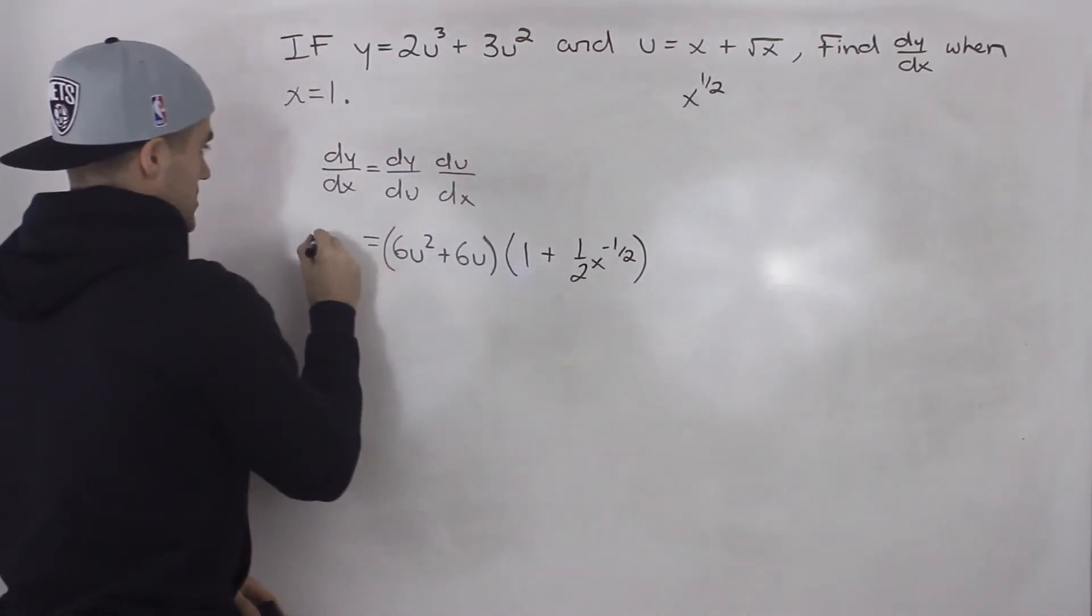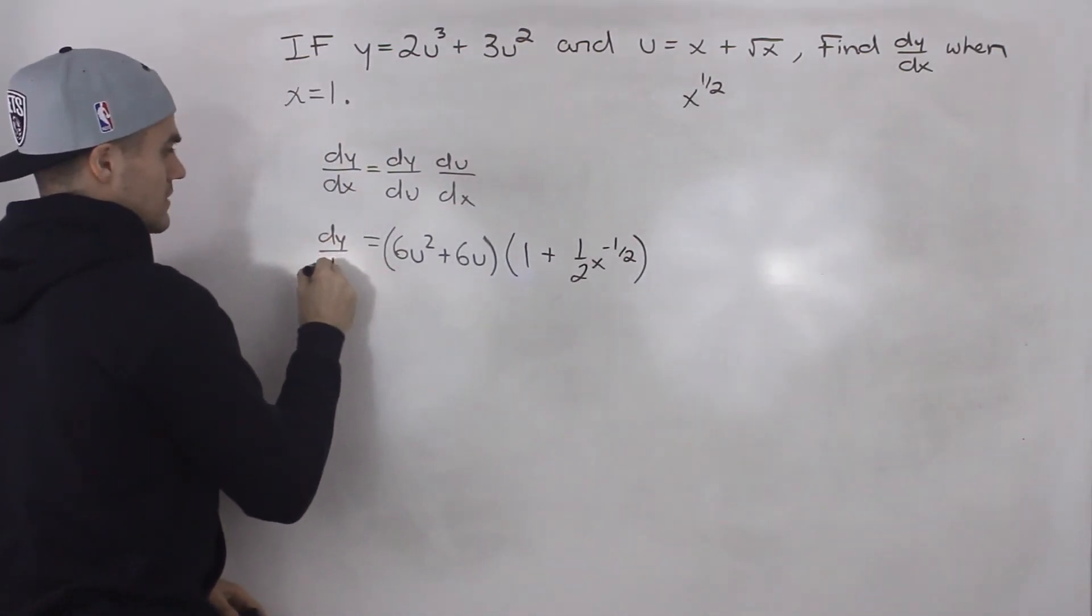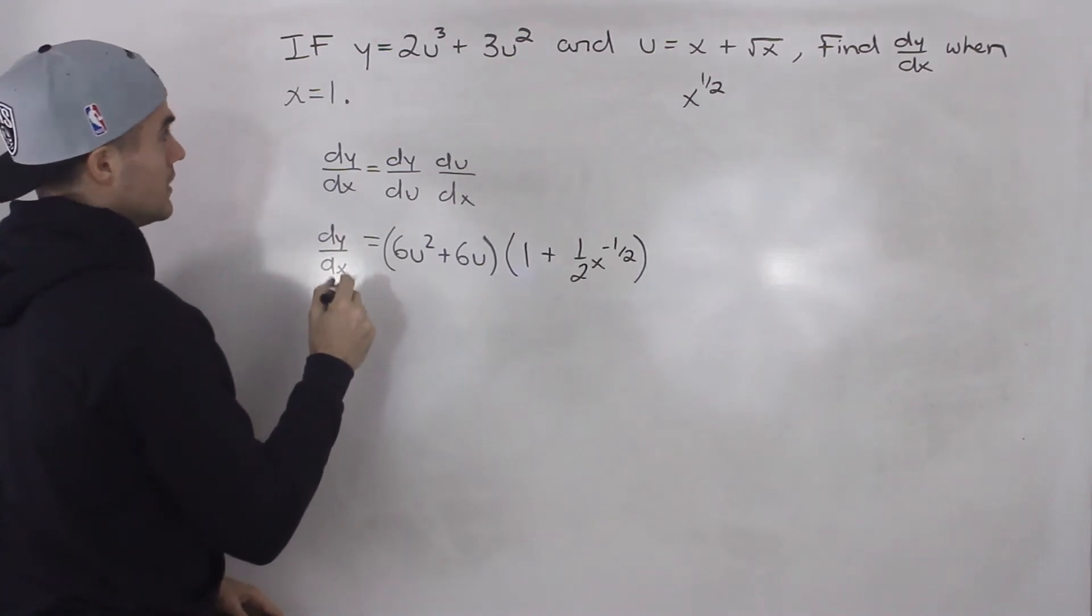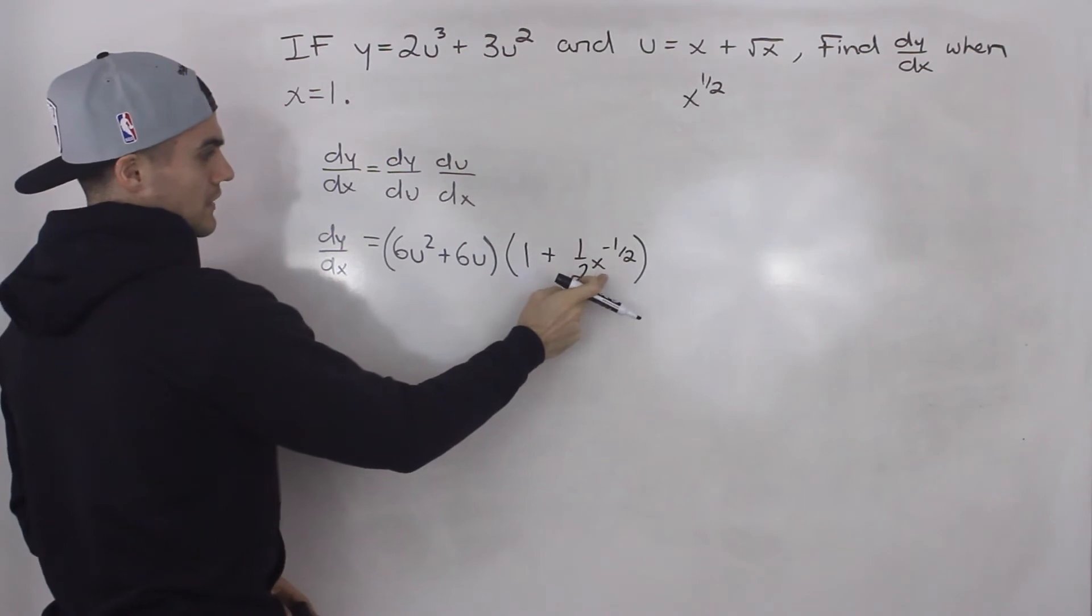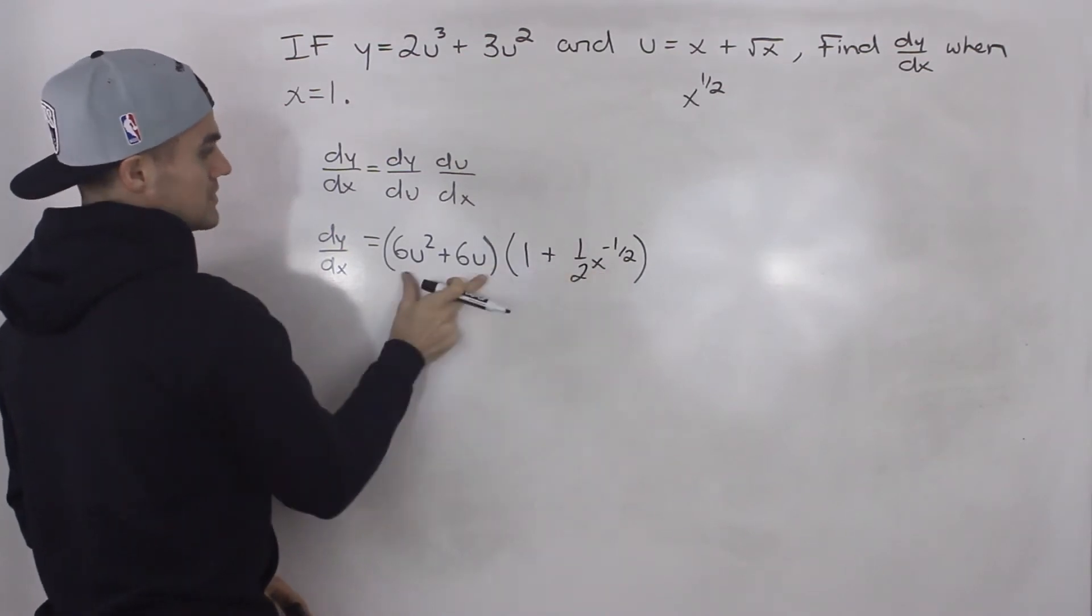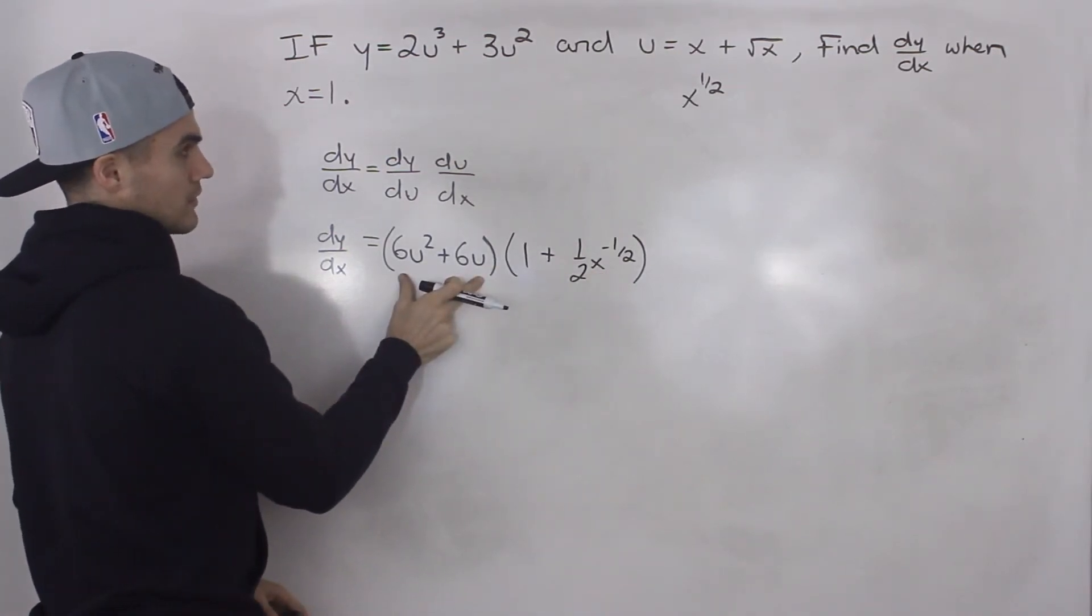So now we have an expression for dy by dx, and we just got to plug in an x value of 1. So we would plug in 1 for this x value here, but notice that we can't plug an x value of 1 here in this bracket.